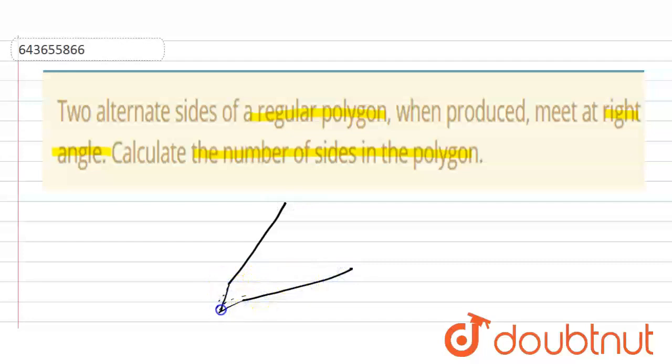so they meet at a certain point and they form this angle. So this angle is the interior angle. This is the interior angle of polygon.